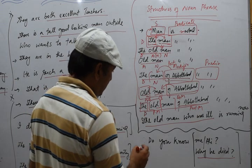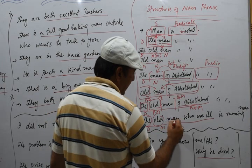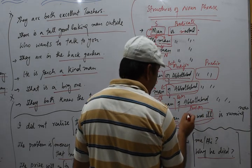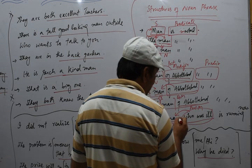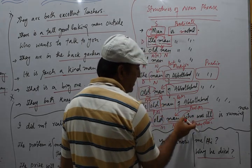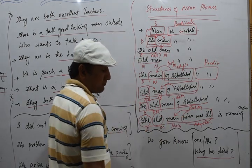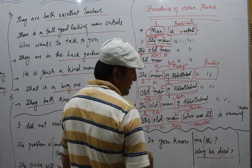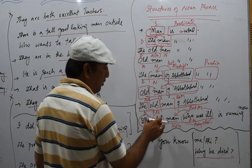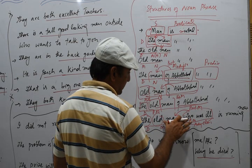Then we have the last structure with determiner, 'old' as modifier, and 'man' as keyword noun. We also add 'who was ill' — this is a clause. This clause tells us about 'man,' so we call it an adjective clause. It also works as a post-modifier. Combined, 'the old man who was ill' is a noun phrase working as a subject, with 'is running' as the predicate.